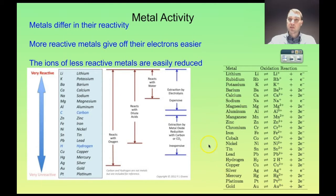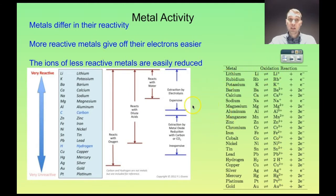Here are a couple of different examples of activity series. This one looks at reactions, and this one looks at oxidation reactions as well. So we've got the oxidation reactions over here. What this means is that metals up here are fairly active — they give off their electrons easily. So potassium, for example, is very reactive.